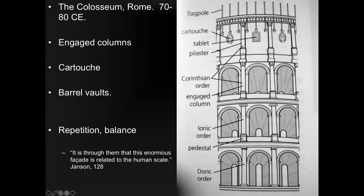You can see how they use many different types of engaged columns: the Doric, the Ionic, and then what's called the Corinthian, which is the fanciest. Right here we have cartouches. Kind of like modern stadiums where you see a corporate sponsor, the same thing applies here — wealthy families in Rome raised money for the Colosseum and were able to get their family crest somewhere on the building.